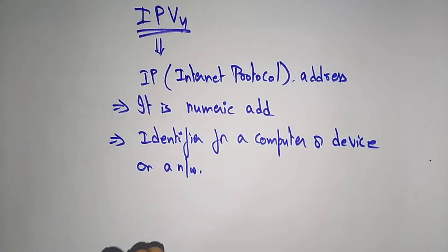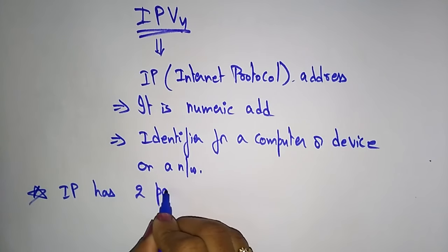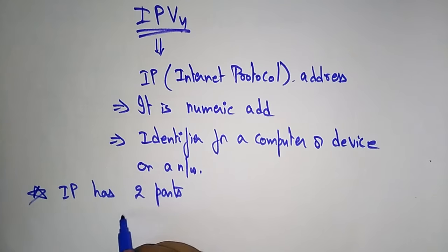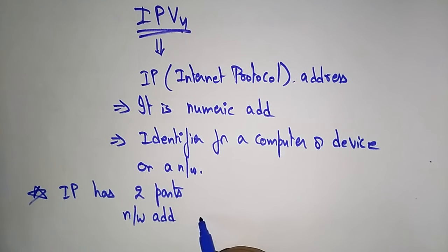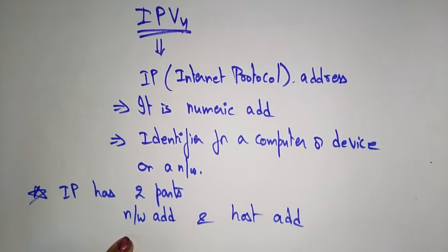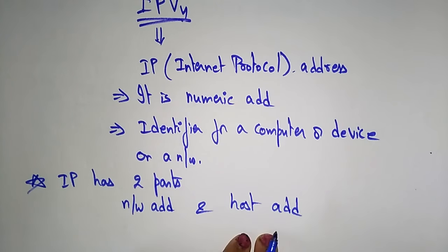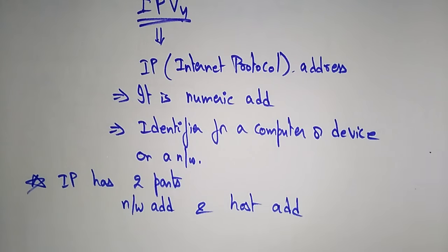Every device has an IP address for communication purposes. The Internet Protocol has two parts: one is the network address and another is the host address. The network address tells on which network you are putting the data. The host address is the destination address — from where to where you are sending the data.